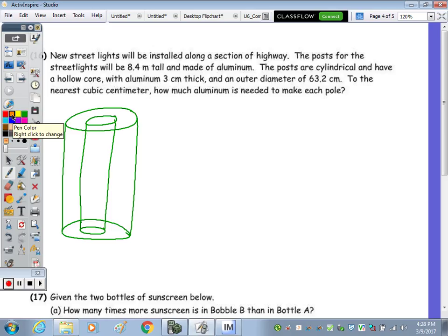I have a hollow core with aluminum of 3 centimeters thick and an outer diameter of 63.2 centimeters. Since we have two different units of measurement, I'm going to change this 8.4 meters to be centimeters. So multiply by 100, it would be 840 centimeters. So my height is 840 centimeters. And that's the height of both cylinders. Then using that statement, the aluminum is 3 centimeters thick and we have an outer diameter of 63.2. So that means the outer radius, divide that by 2, is 31.6 centimeters.